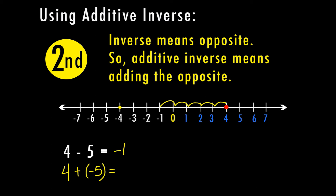The other thing you can do is use your sign rules. Because four and negative five are opposite signs — they have different signs — so I'm going to subtract and find the difference. Then I'm going to keep the sign of the higher value number, which is the negative.